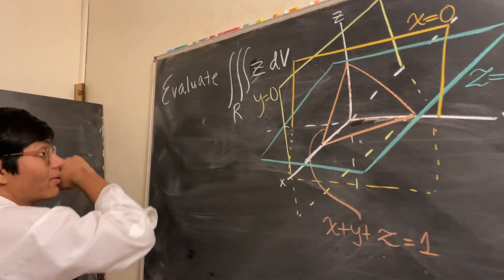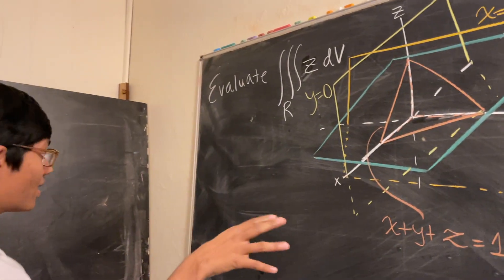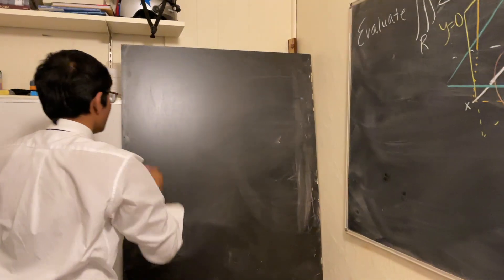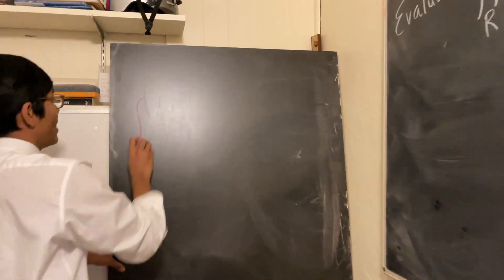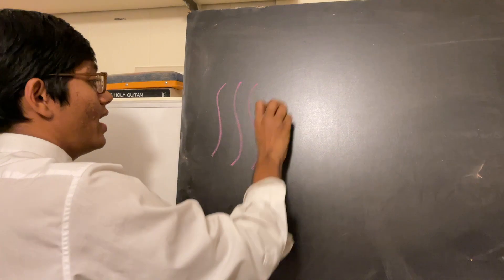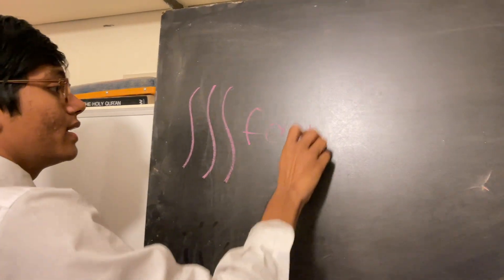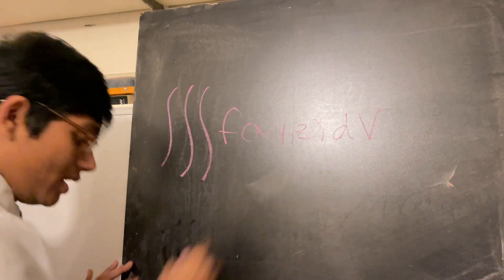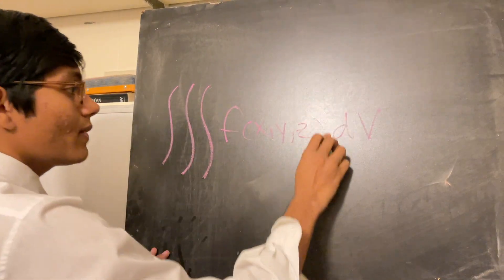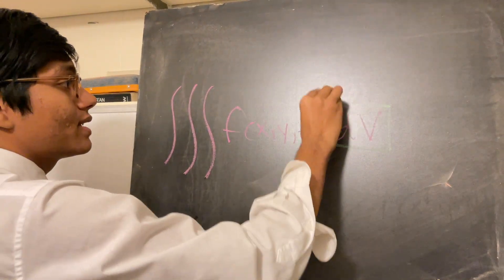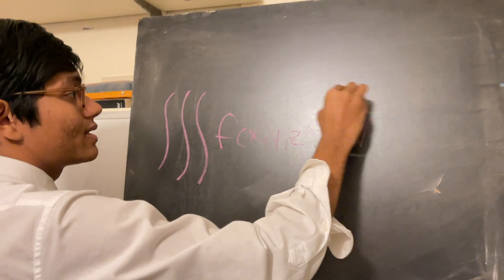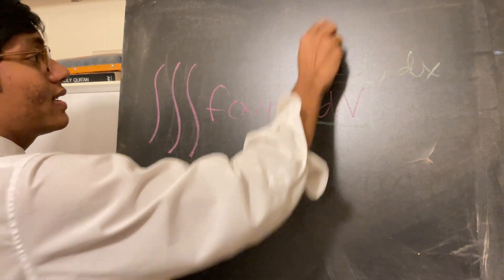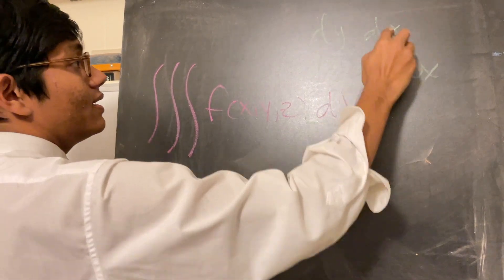Now we're going to recall the definition of a triple integral. If I have a triple integral of F of X, Y, Z dV, the dV can be any of six possible permutations of the three variables — for example, dZ dY dX, or dY dX dZ, and so on.